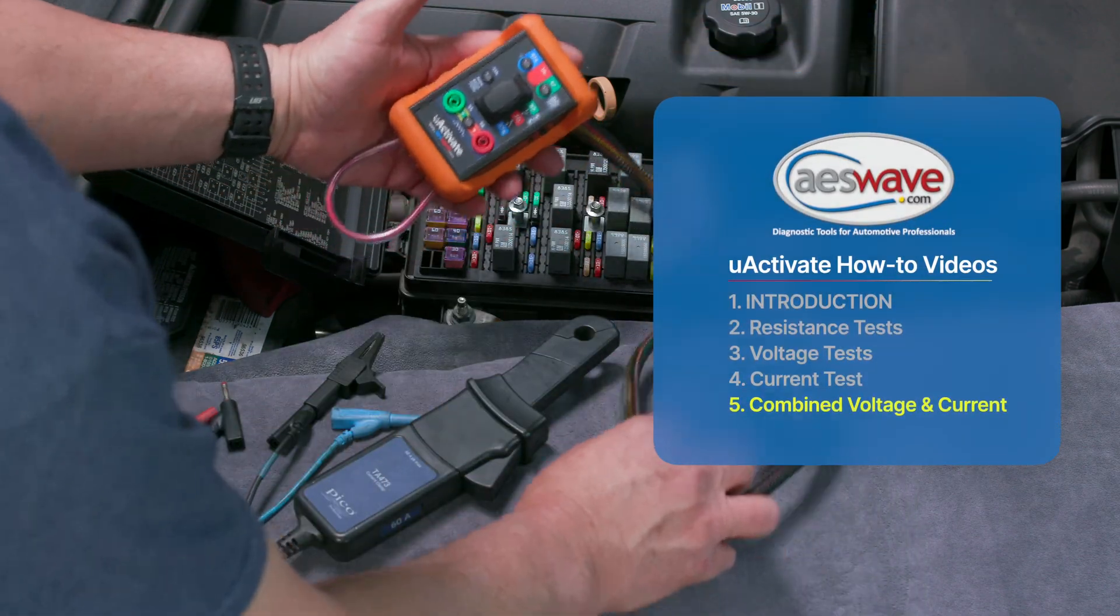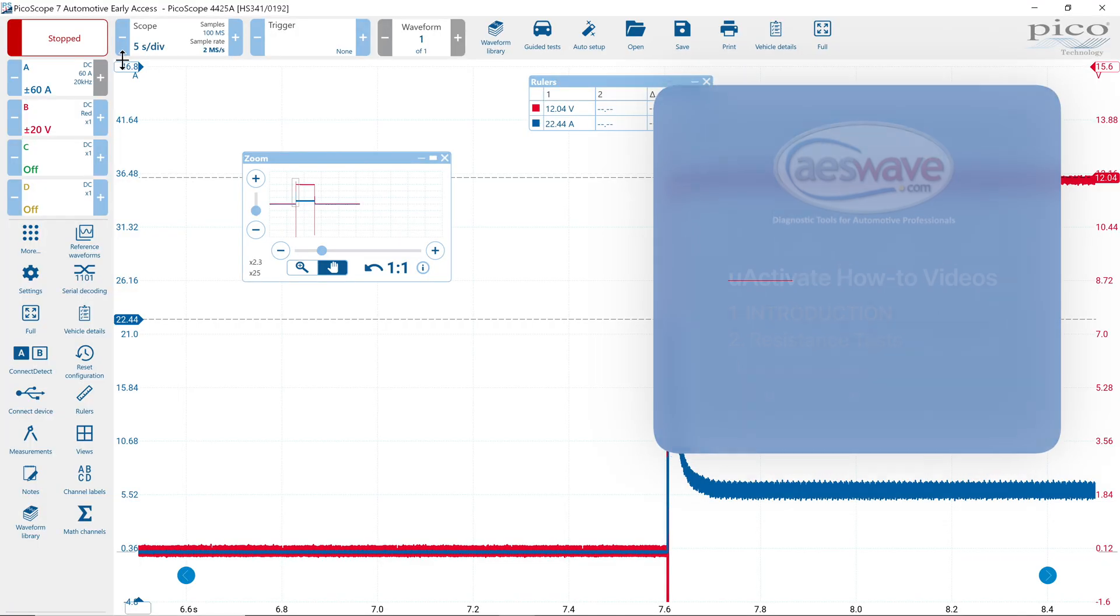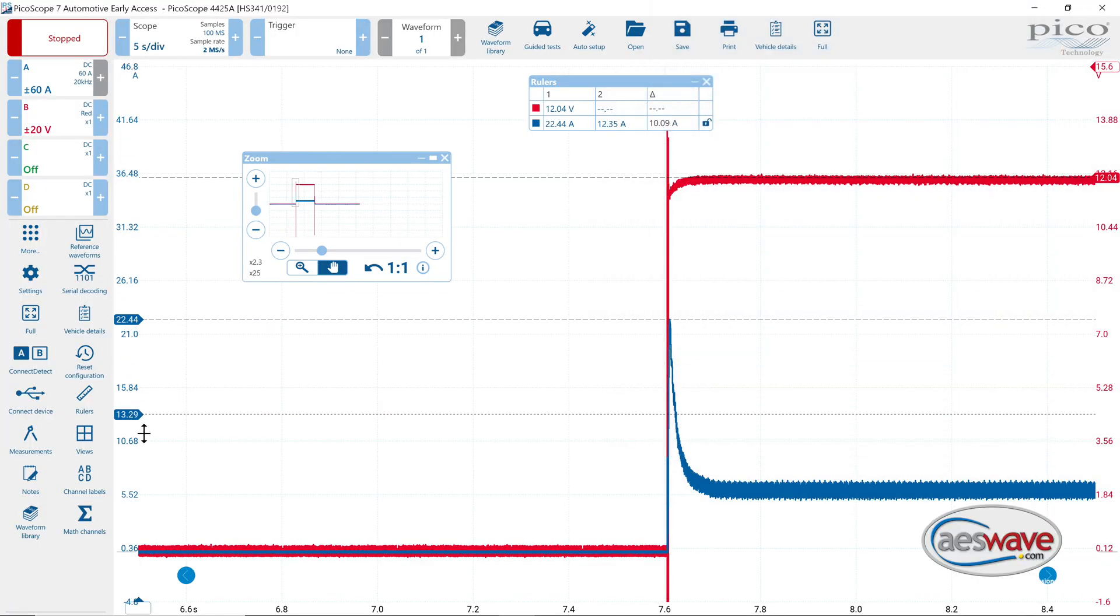In this video we'll be performing voltage and current testing with the Uactivate and the Picoscope. Voltage and current waveforms tell us not just how much energy is being used, but how it's being used, giving us a clear view into the circuit performance.